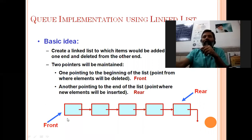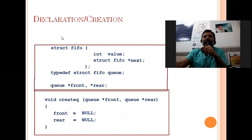This is the structure. One node of linked list is declared here with value and a pointer. Typedef struct fifo queue, we are declaring this front and rear.